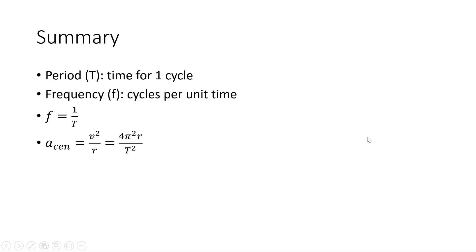In summary, period, capital T, is the time for one cycle. Frequency, little f, is the number of cycles per unit time. They're inversely related. We can also then write our centripetal acceleration equation, v squared over r, as 4 pi squared r over T squared. That's all. Bye.